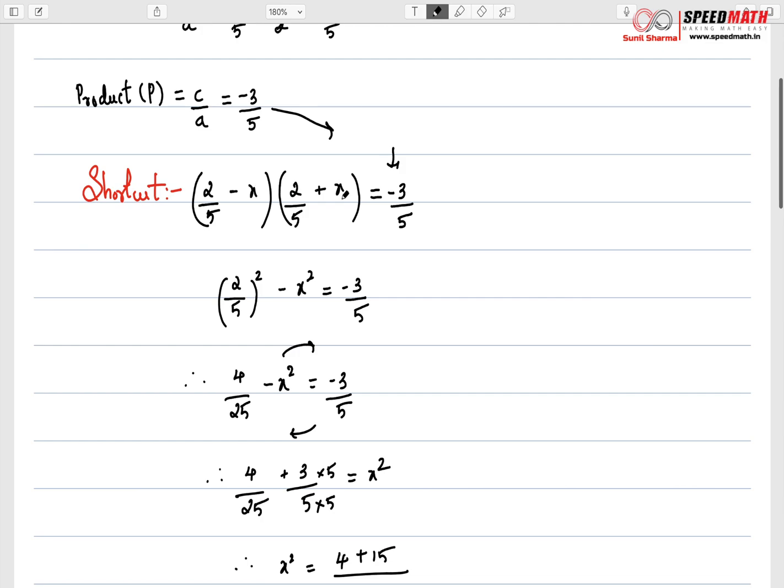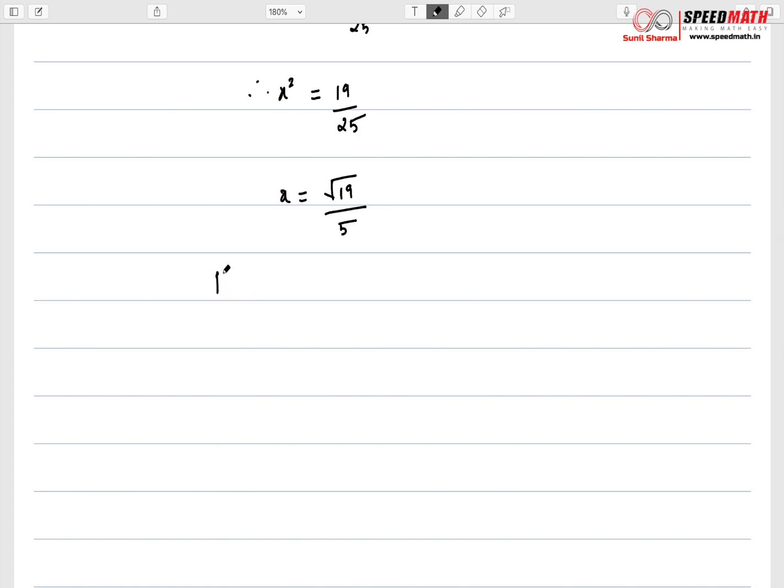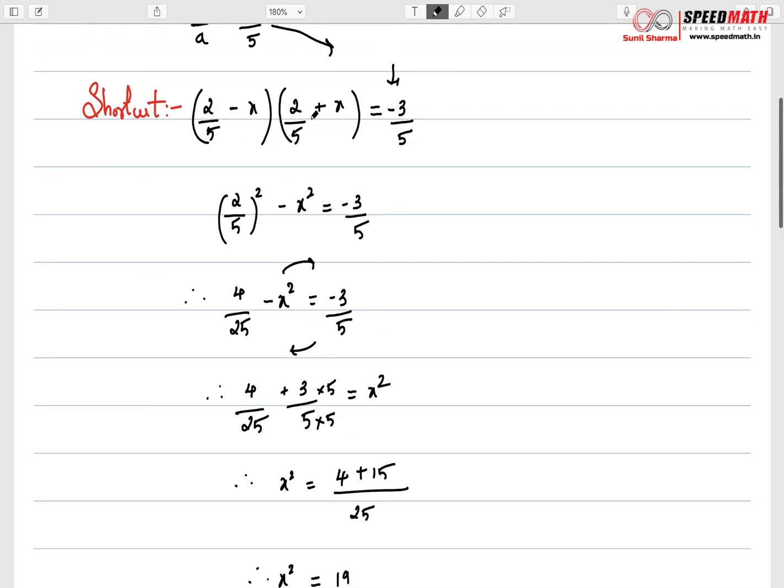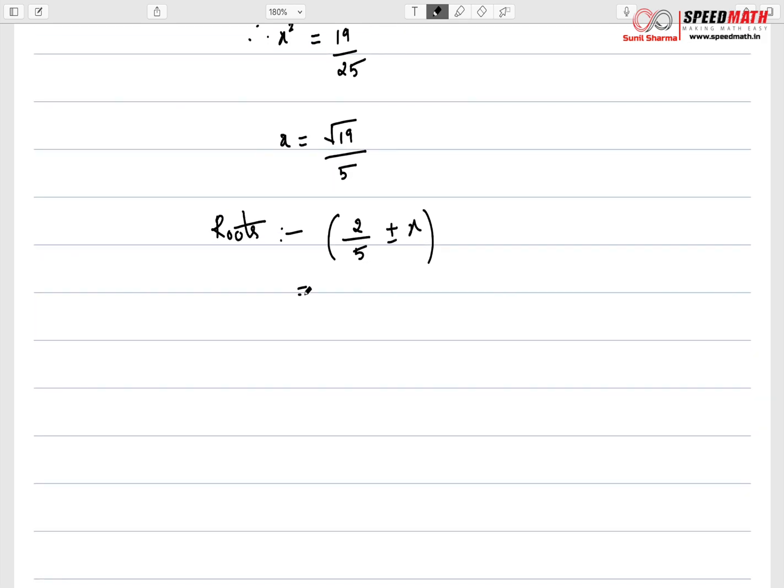So we just need to substitute value of x here. So the roots are 2/5 plus minus x. We can just simply write 2/5 ± x. So we just substitute value of x from here, which is √19/5. So the denominator is same here. So we can write common denominator 5 and we have 2 ± √19. So how quickly we have got the roots over here? So this makes your life very easy.